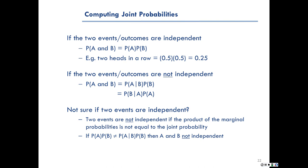If we're not sure if two events are independent, one way to find out is by trying to compute these probabilities. If we have the contingency table, we know that two events are not independent if the product of the marginal probabilities is not equal to the joint probability of those two events together. Another way of saying it: if P(A) × P(B) ≠ P(A|B) × P(B), then A and B are not independent.